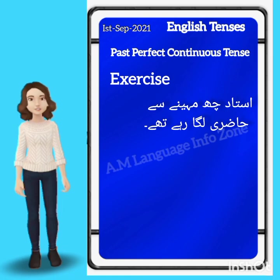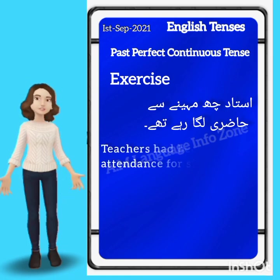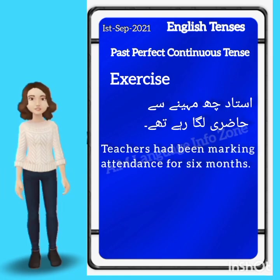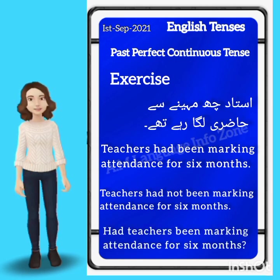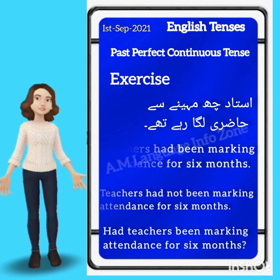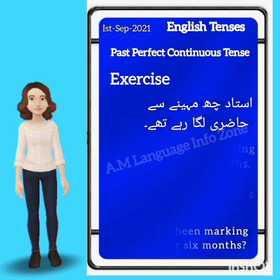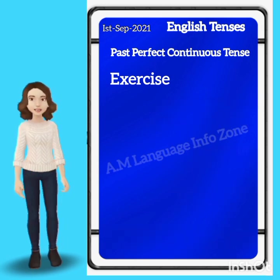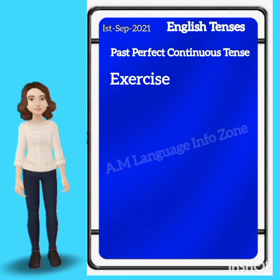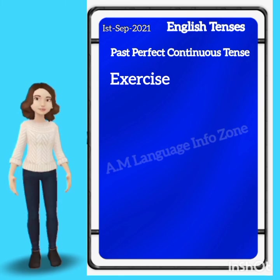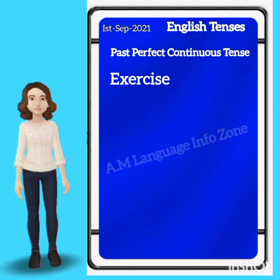Translation exercise — Urdu: 'Ustad chhai mahine se hazri laga raha hai.' English: 'Teachers had been marking attendance for six months.' Negative: 'Teachers had not been marking attendance for six months.' Interrogative: 'Had teachers been marking attendance for six months?' So friends, today our lecture ends here. I hope you understood.